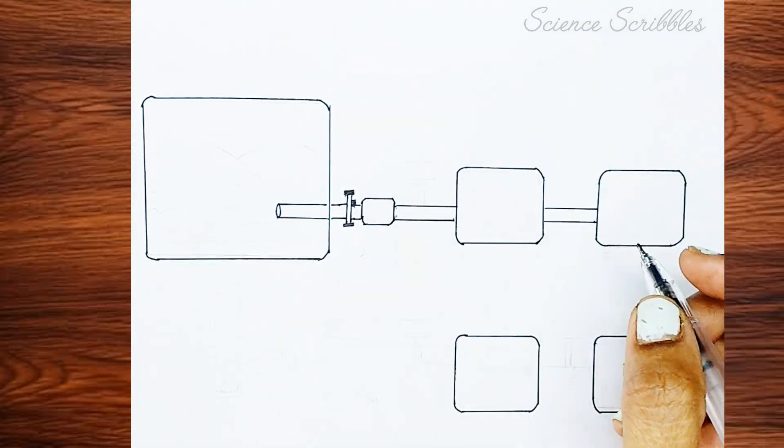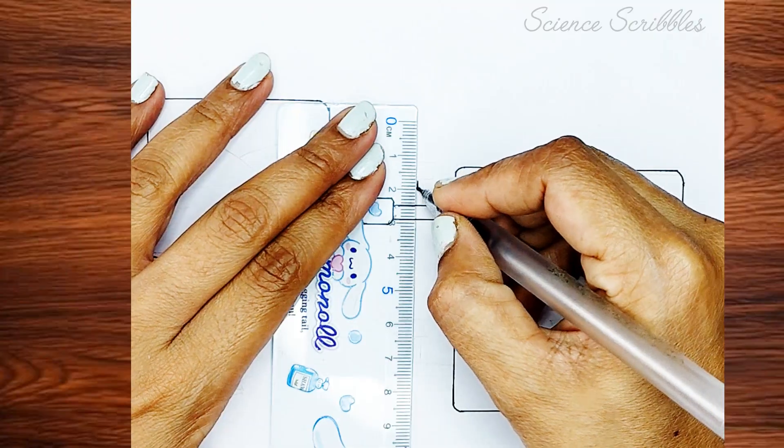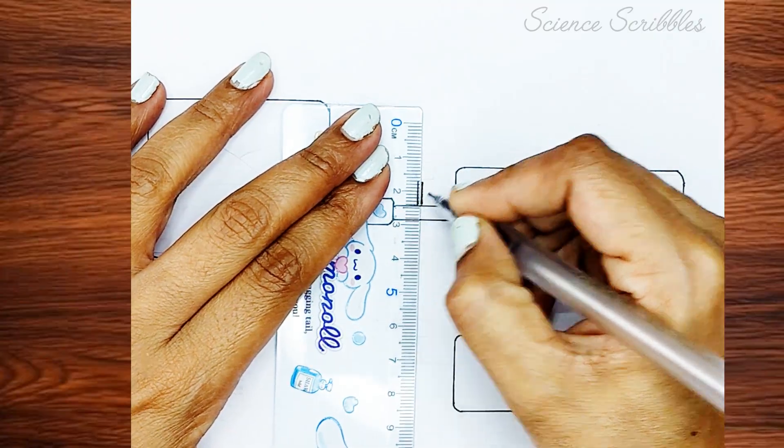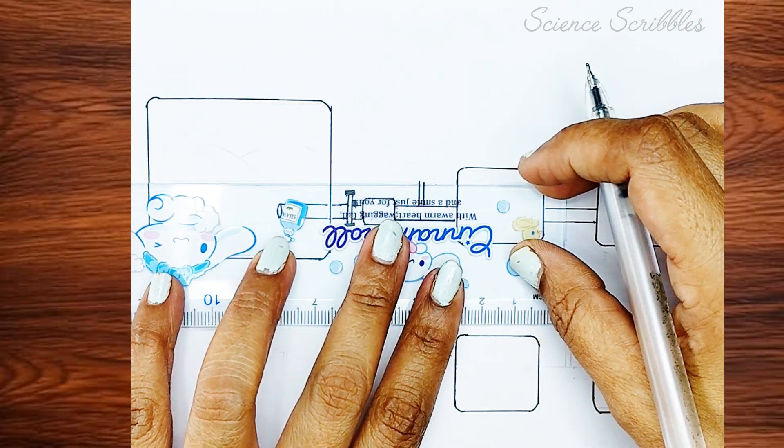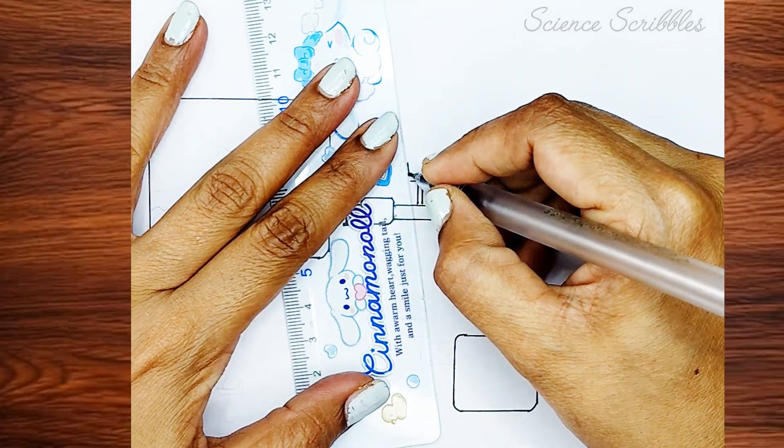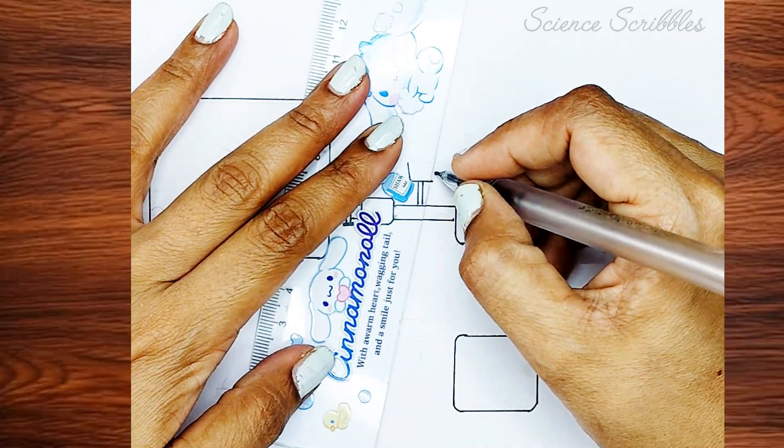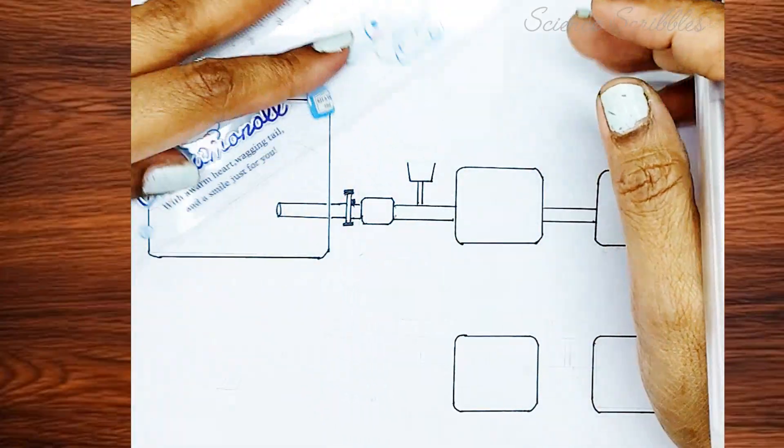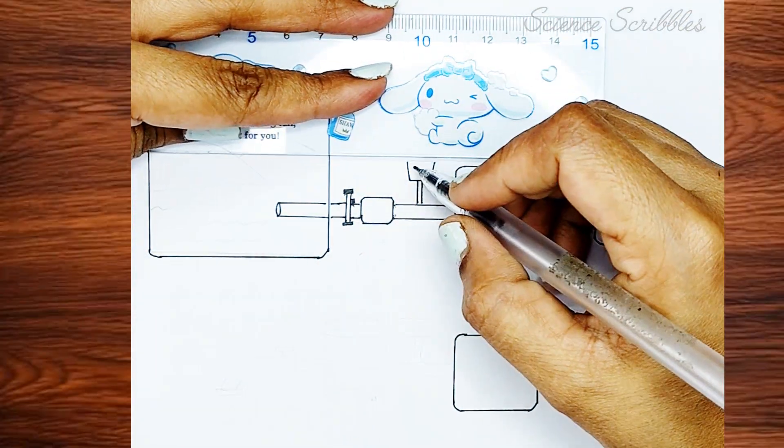Then, let's draw a cup-shaped unit where coagulants are added to the pipeline. Coagulants are chemicals added to the water to help small dirt particles and contaminants clump together into larger particles known as flocks. This process makes it easier to remove unwanted contaminants, helping to clean the water effectively.